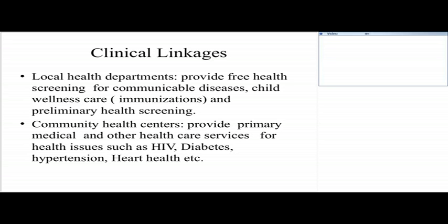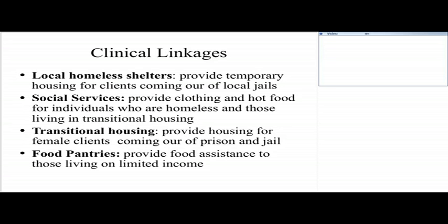They provide primary medical and other health care services for other health issues such as diabetes, hypertension, and heart health. When I look at the community linkages, we work very closely with shelters, social services, transitional housing, and food pantries. Because over 80% of our clients are homeless at some point or living in transitional housing, and about 50% of our clients come out of federal, local, and state prison and jail.